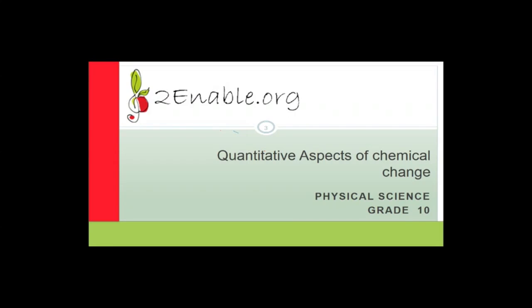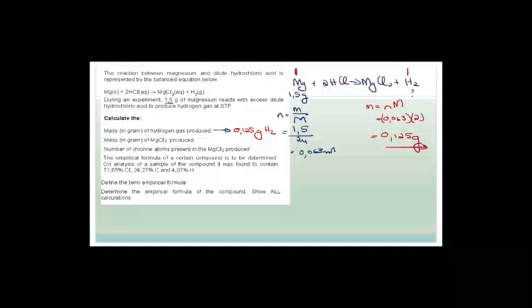Good day, grade 10s. Welcome to this next lesson on science. In this lesson, we're going to carry on with quantitative aspects of chemical change. If you recall, we were busy working through some exam paper questions, and I always find that working through exam paper questions really helps us to get to grips with understanding the subject matter. The best way to do science is to study the theory so that you understand which equations to use and the theory behind it, and then to practice using exam papers and old tests. As you're practicing, you might realize where you are lacking understanding, and then you need to go back and re-study. So let's go through what we've done so far.